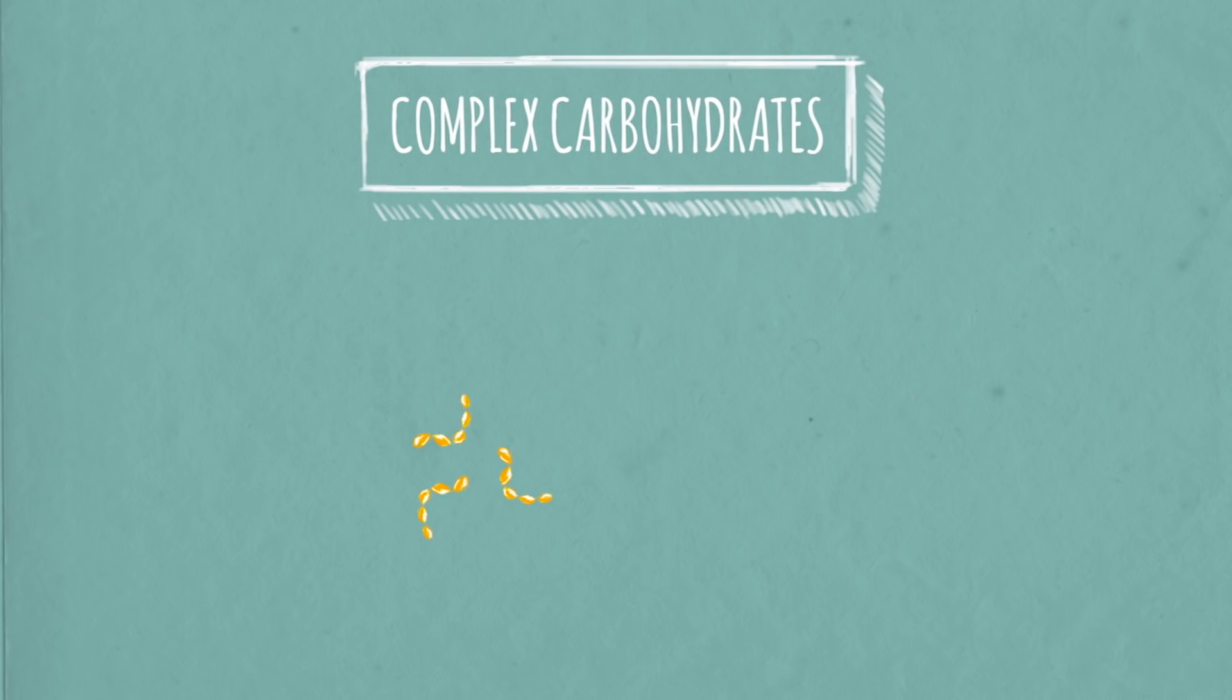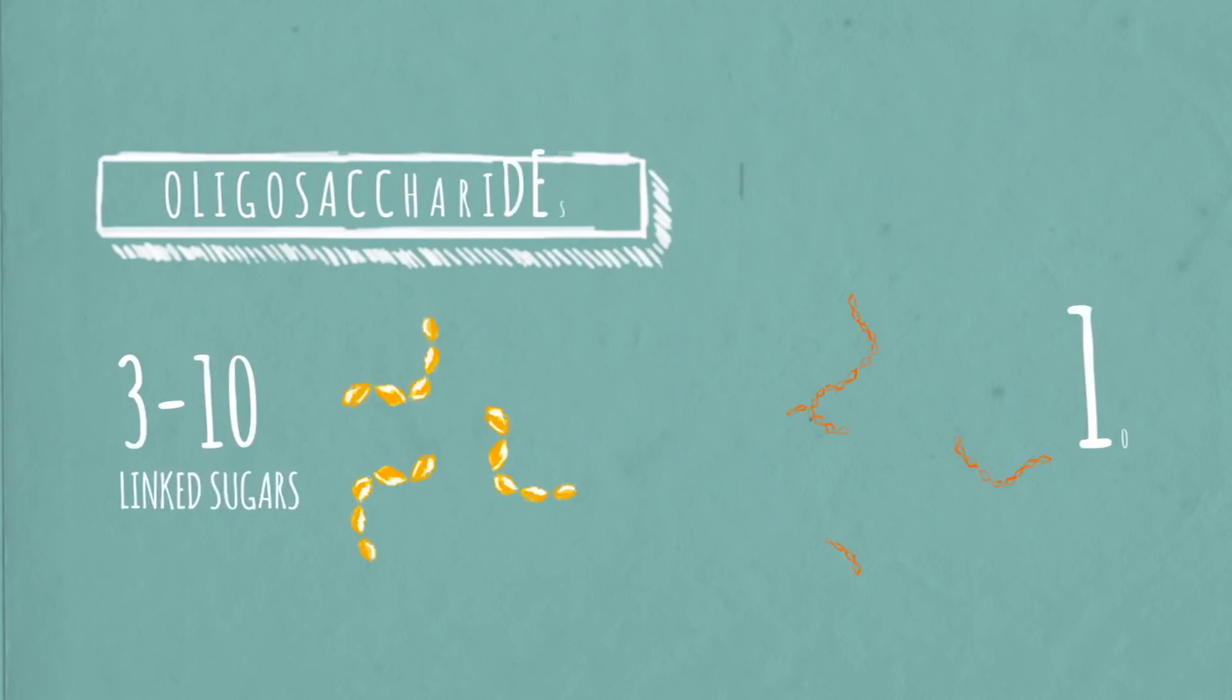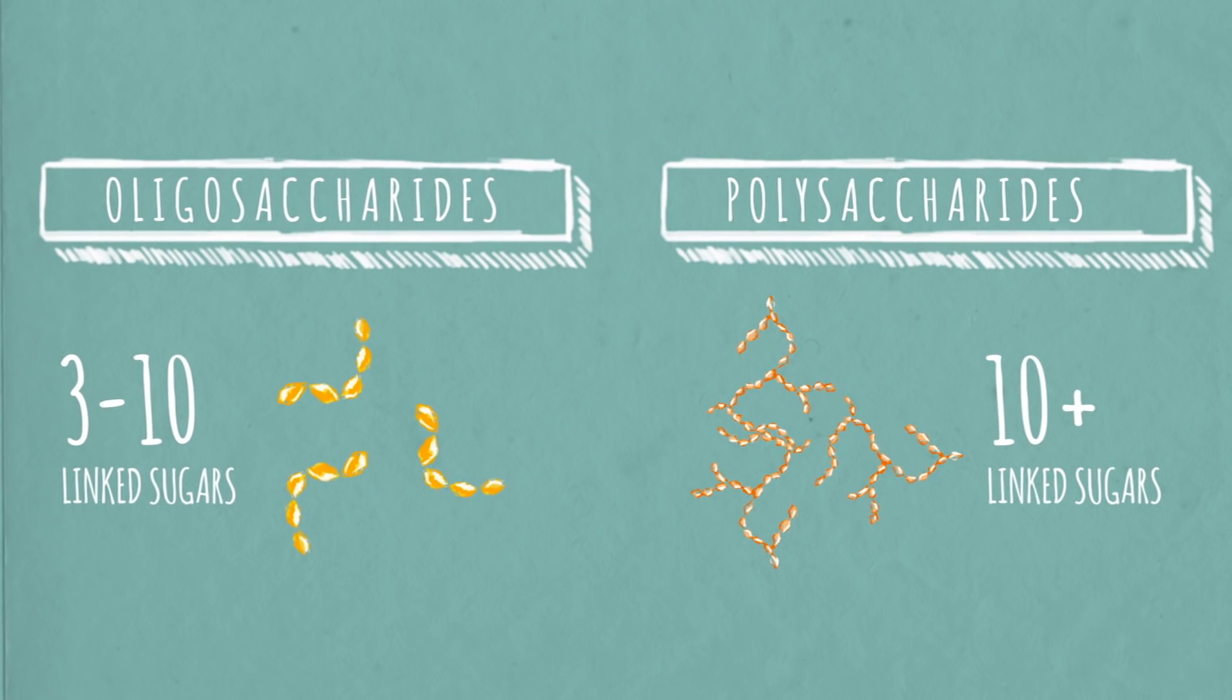Complex carbohydrates, on the other hand, have three or more simple sugars strung together. Complex carbohydrates with three to ten linked sugars are oligosaccharides. Those with more than ten are polysaccharides.